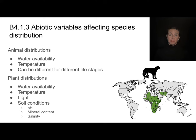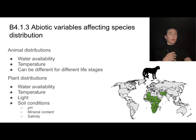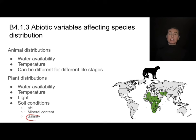Animals and plants don't live everywhere — even mosquitoes are only distributed in some parts of the planet. We call this species distribution: where a species can be found and can live. Animal distributions tend to revolve around water availability and temperature, which can be different for different life stages — especially with aquatic animals. Plant distributions also depend on water availability and temperature, but plants also need to be specially evolved for light conditions and soil conditions. Some plants prefer acidic soil, others need different mineral contents or are adapted to different salinity levels. These are all abiotic components that affect the distribution of species.